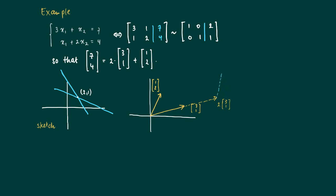So here we get [7,4] which is the sum of the two vectors 2 times [3,1] and 1 times [1,2].